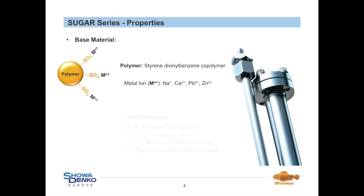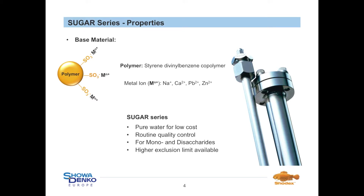Shodex offers the Sugar series with a sulfonate-modified surface with corresponding metal cations, namely sodium, calcium, lead, and zinc. The Sugar series can be used with pure water as eluent. These column types are often used in routine quality control and are suitable for the separation of mono and disaccharides. In some cases, columns with higher exclusion limits are also available to separate oligosaccharides.